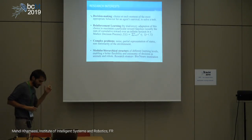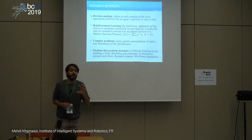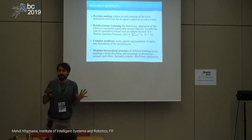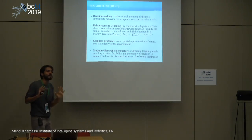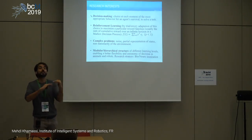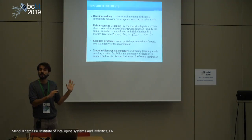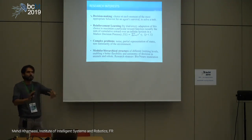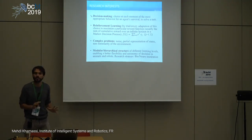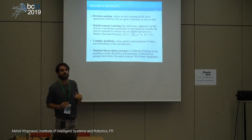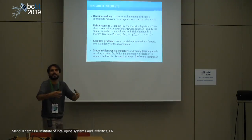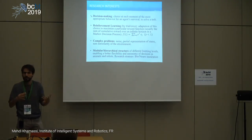One very strong assumption we make in all the experiments: we assume that agents, in particular the animals, have a constant motivation for this reward. We suppose that we control the task sufficiently well that they really want this reward all the time, though of course there are many different things we neglect.